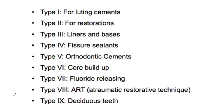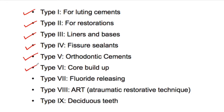According to the newer classification, glass ionomer cements according to their use can be classified into 9 types: type 1 for luting, type 2 for restoration, type 3 for liner and bases, type 4 as fissure sealants, type 5 the orthodontic cement, type 6 core buildup, type 7 the fluoride releasing GIC, type 8 GIC is used for ART technique, and type 9 for deciduous teeth.